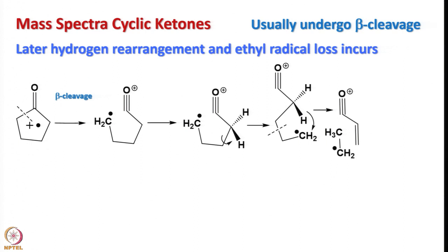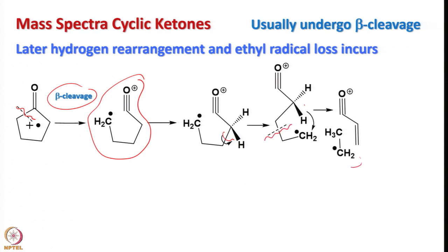Now let us look into the mass spectra of cyclic ketones. Cyclic ketones usually undergo beta cleavage. Hydrogen rearrangement and ethyl radical loss can also happen. Initially, beta cleavage gives a ring-opened species, then hydrogen rearrangement occurs. Cleavage can then happen again to give an ethyl radical and the resulting species. These are the major fragments one can anticipate in the mass spectra of cyclic ketones.